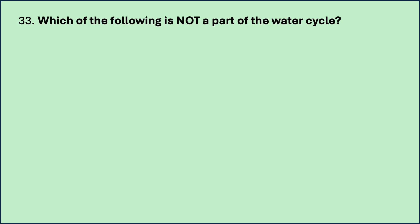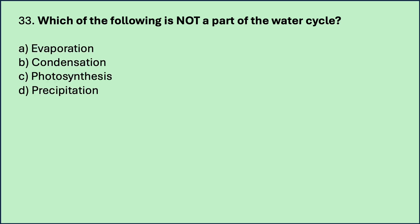Which of the following is not a part of the water cycle? Options are: evaporation, condensation, photosynthesis, precipitation. Which is the correct answer? Photosynthesis.